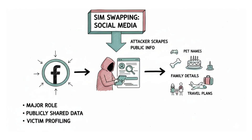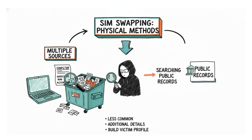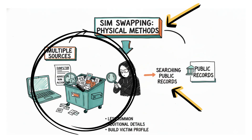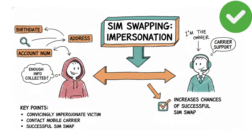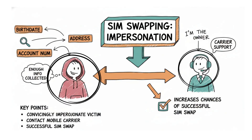Social media also plays a major role as attackers scrape publicly shared information like pet names, birthdays, family details, or travel plans. In less common situations, they may use physical methods such as dumpster diving or searching public records to obtain additional details. When enough information is collected, the attacker can convincingly impersonate the victim while contacting the mobile carrier, increasing the chances of a successful SIM swap.